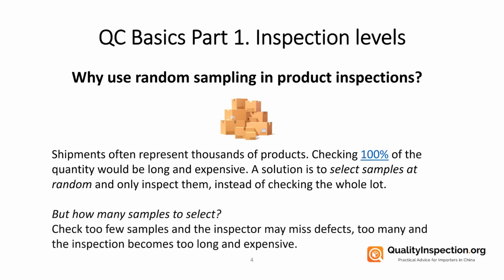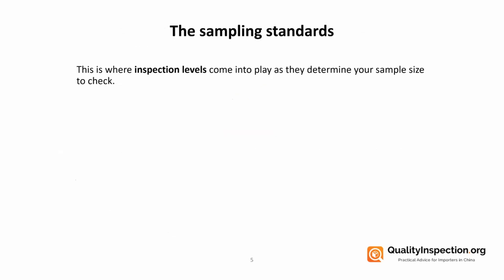So how many samples do we need to select in order to make sure that statistically our quality is going to be okay? If it's too few, the inspector might miss some defects, but if it's too many, the inspection becomes too laborious and too expensive. Inspection levels are used because they determine how many samples it's correct to check.